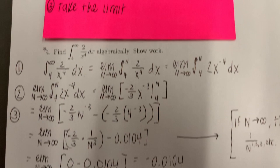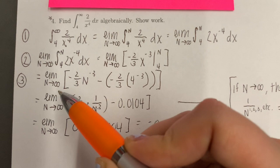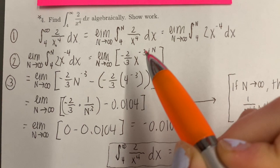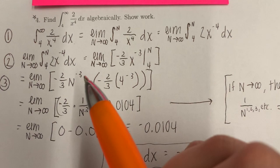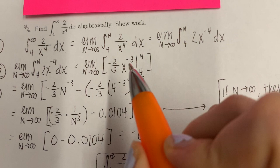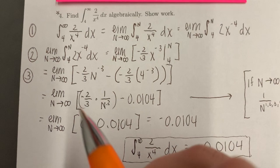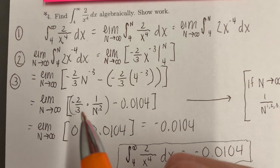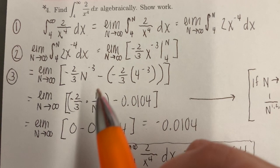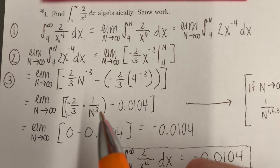Step 3, we take the limit. We have the limit as n approaches infinity. In brackets, we plug n in for x of the antiderivative: negative 2 thirds n to the negative 3rd. We subtract that by plugging in 4 for x: negative 2 thirds times 4 to the negative 3rd. Simplifying, we get the limit as n approaches infinity of negative 2 thirds times 1 over n to the 3rd, which is the same as n to the negative 3rd.